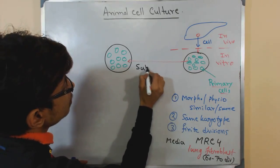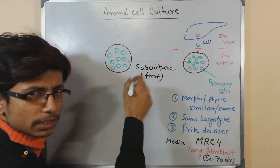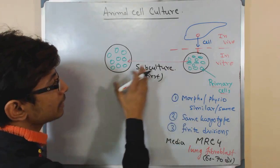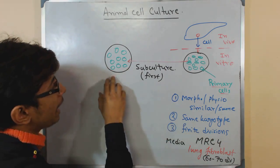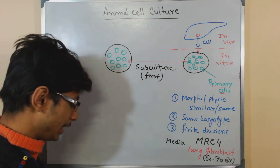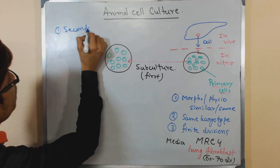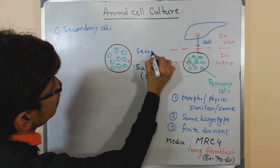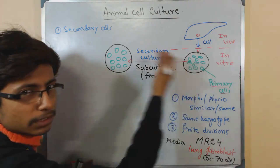This is called a subculture. This is the first subculture that we have done — the first transfer. The initial direct culture doesn't count as a subculture, but moving from one culture to another does. After the subculture process, we have a new set of cells. Those cells can be referred to by many different names: secondary cells, and this whole culture process is called secondary culture, since the first was primary culture.